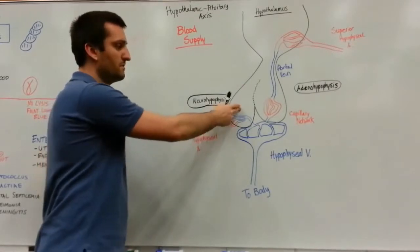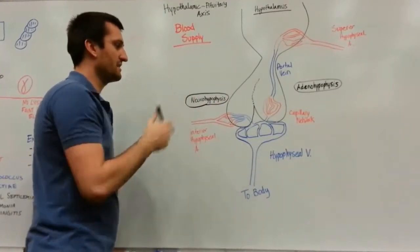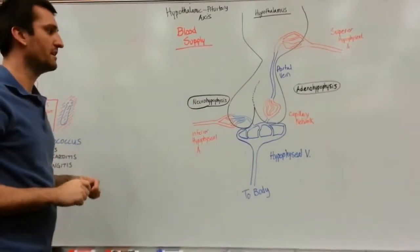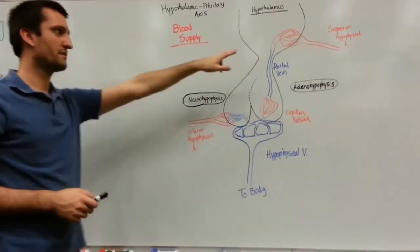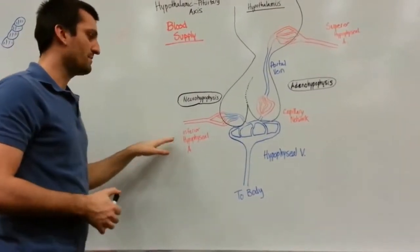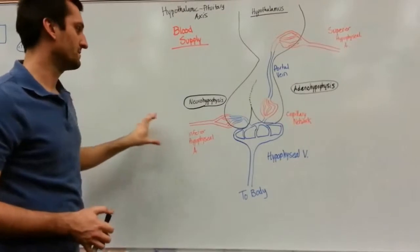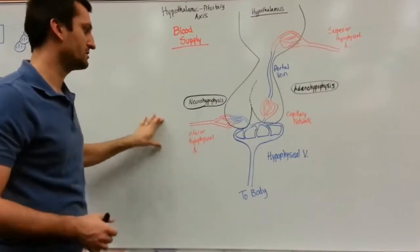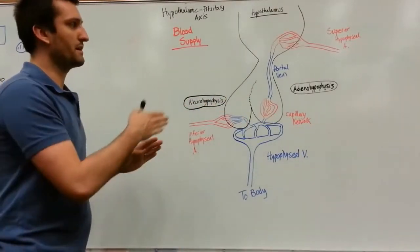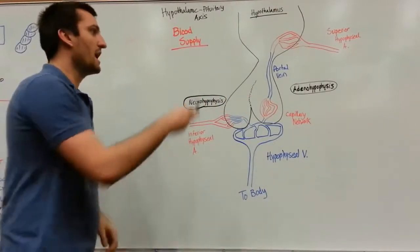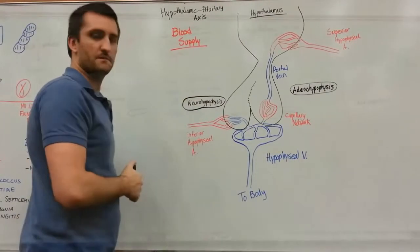Another note: the trabecular artery is going to be connecting the superior and the inferior hypophyseal artery. I didn't draw that in simply because I drew each artery coming in on different sides, but typically they'd be running together and there would be an artery called the trabecular artery that connects the two.